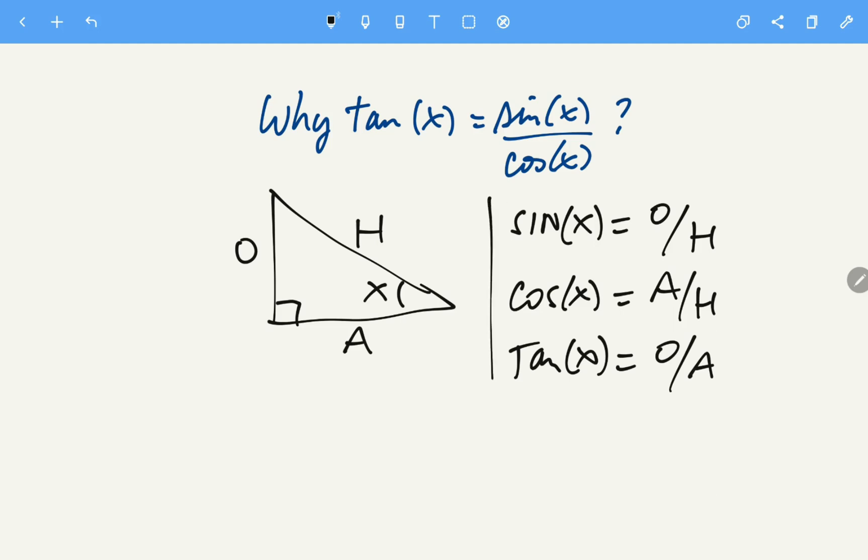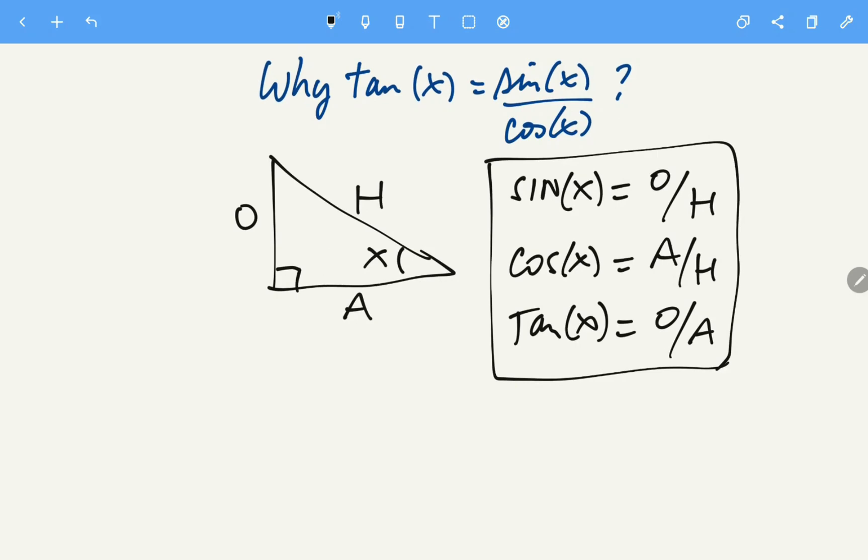So these are well-known relations, trigonometric relations that apply in right triangles. So why tangent of x equals sine of x over cosine of x.